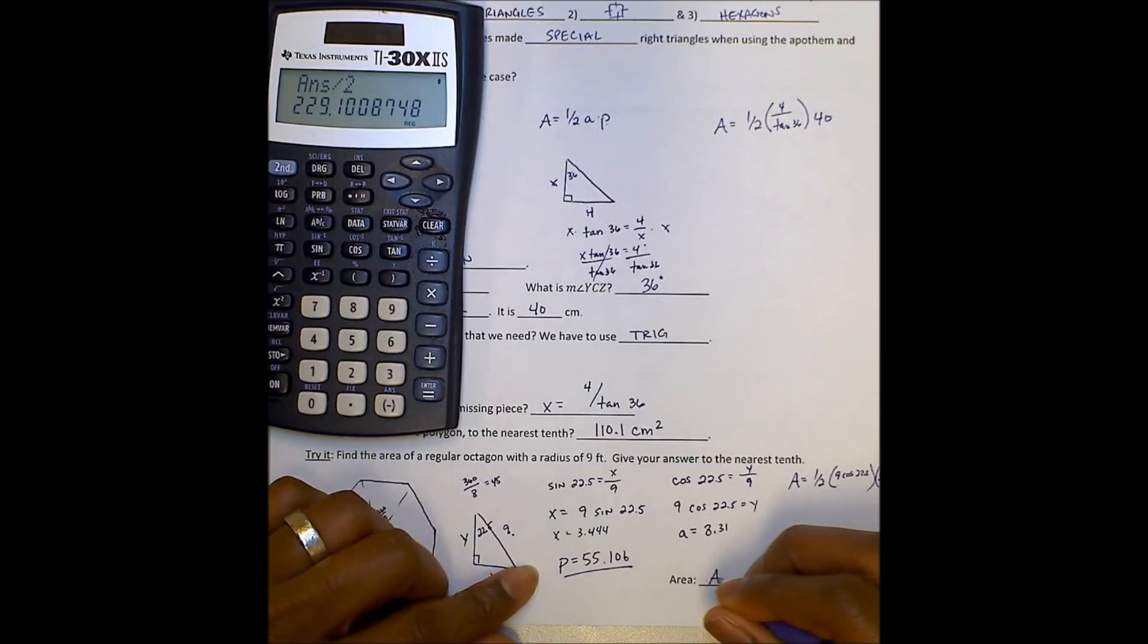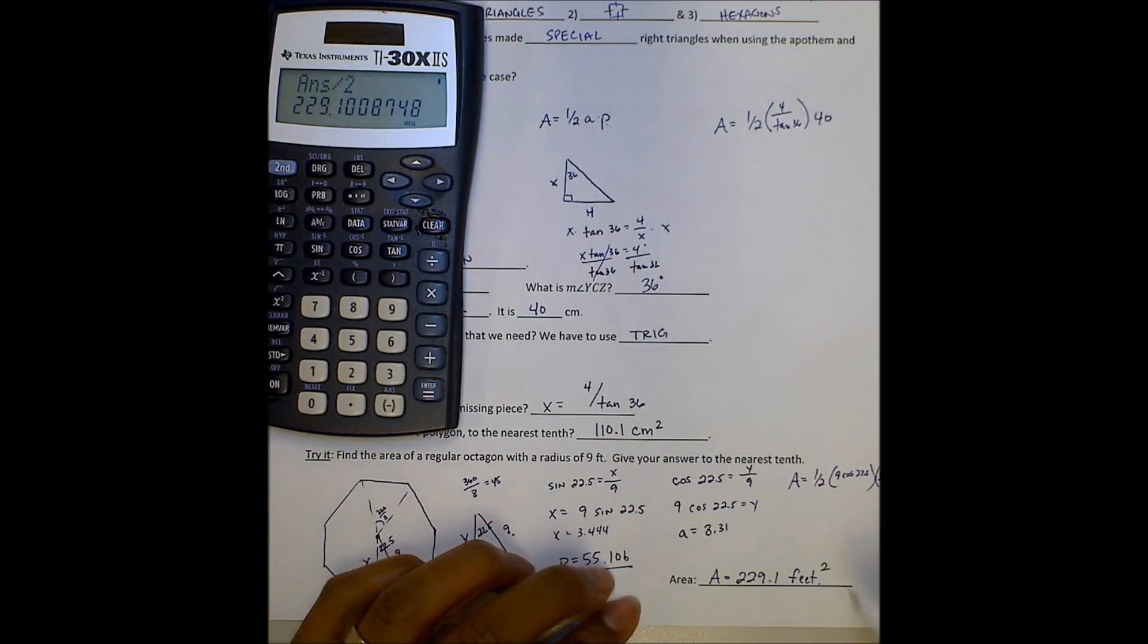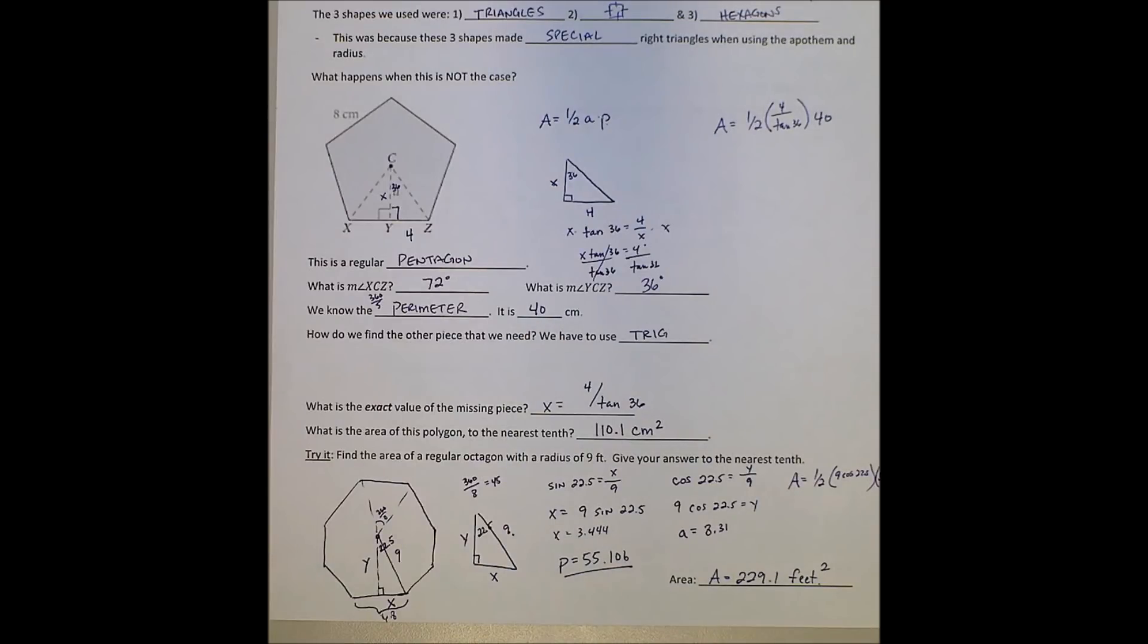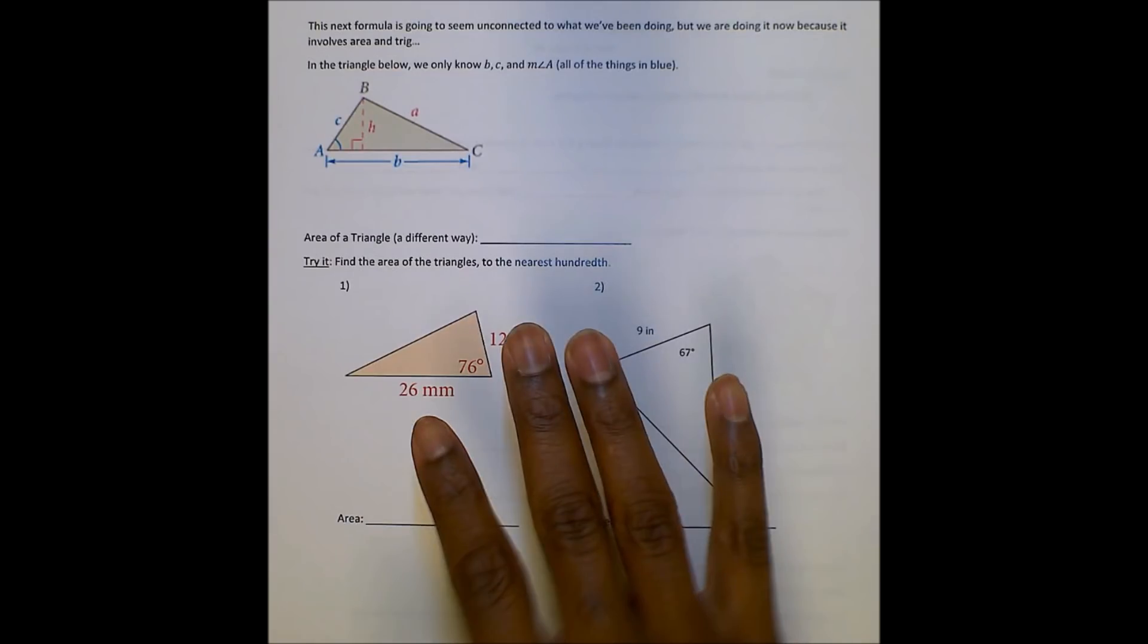So my area will be 229.1 feet squared. Because this is area. So now we're just using trig to be able to find those sides and missing measurement.